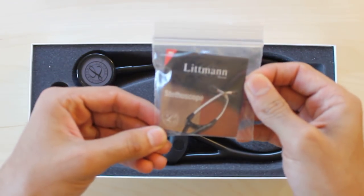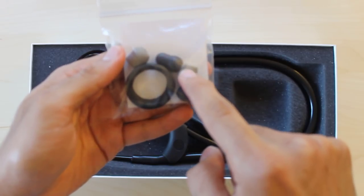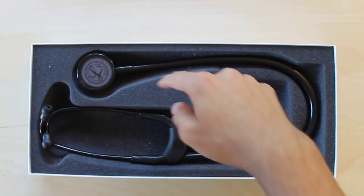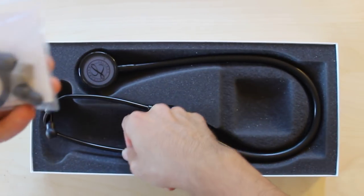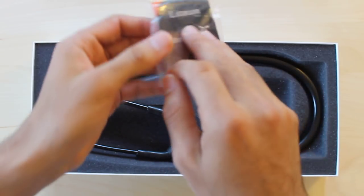So you get this little bag with various colored cushions, which are just extra, and the diaphragm conversion to the bell, which I'll show you how to do.